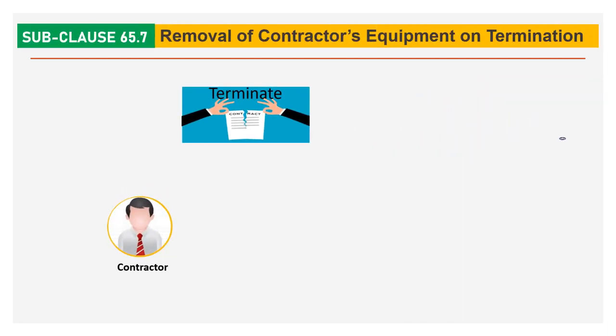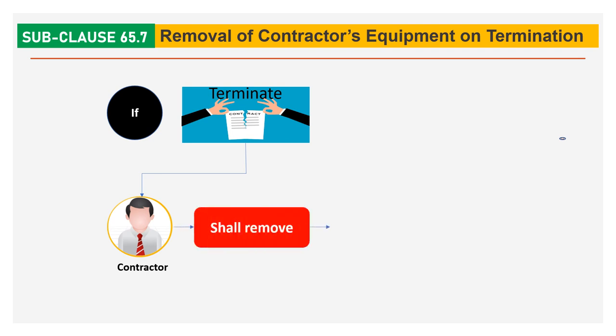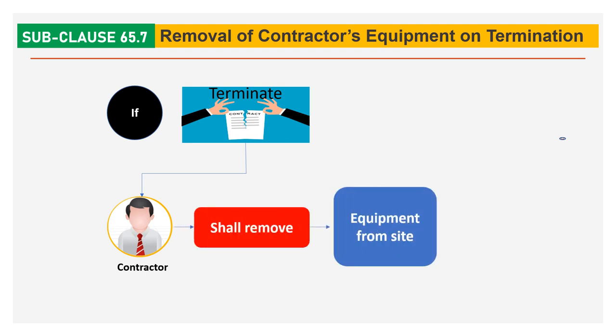Sub-clause 65.7 Removal of Contractor's Equipment on Termination. If the contract is terminated due to an outbreak of war, the contractor shall remove equipment from the site immediately.